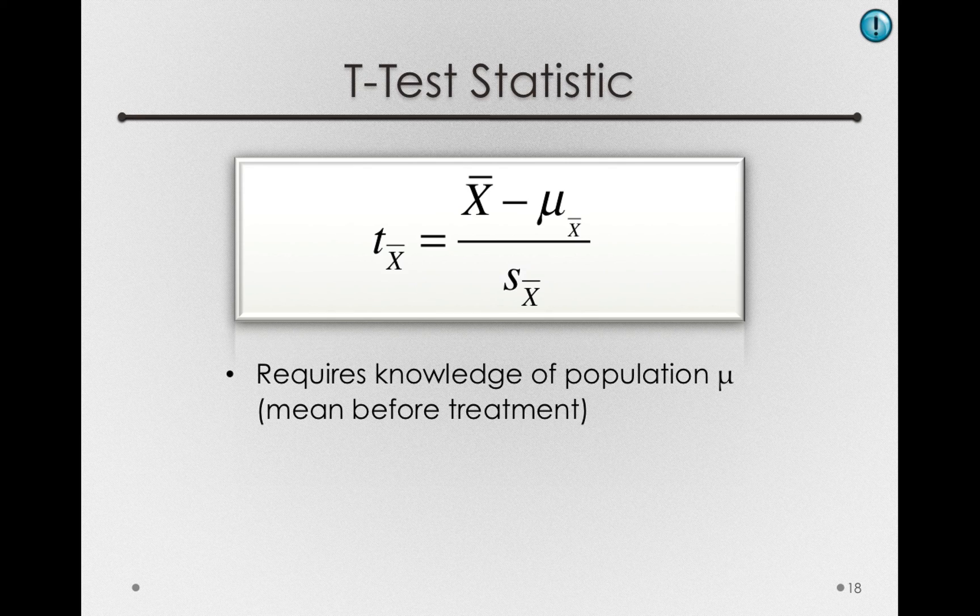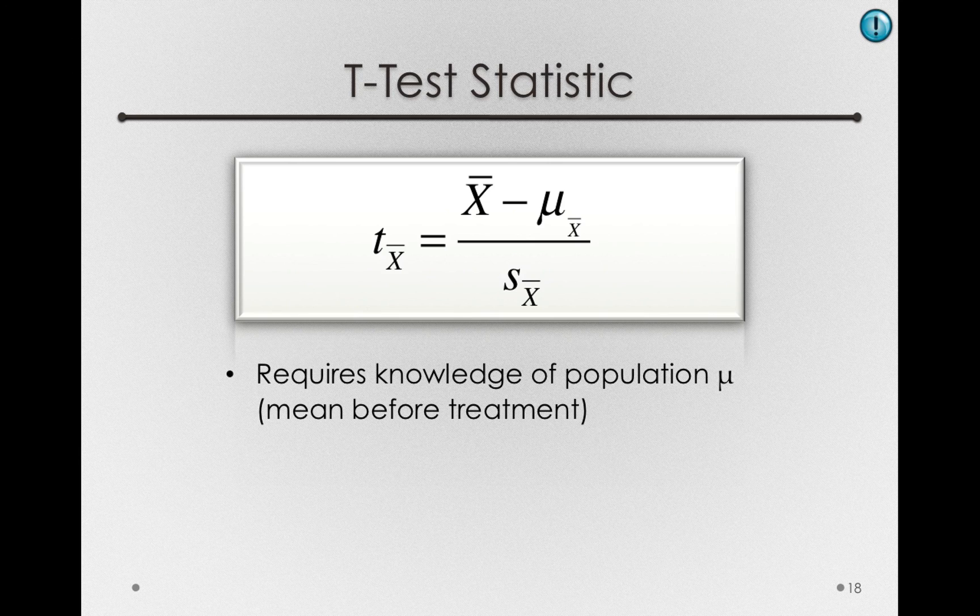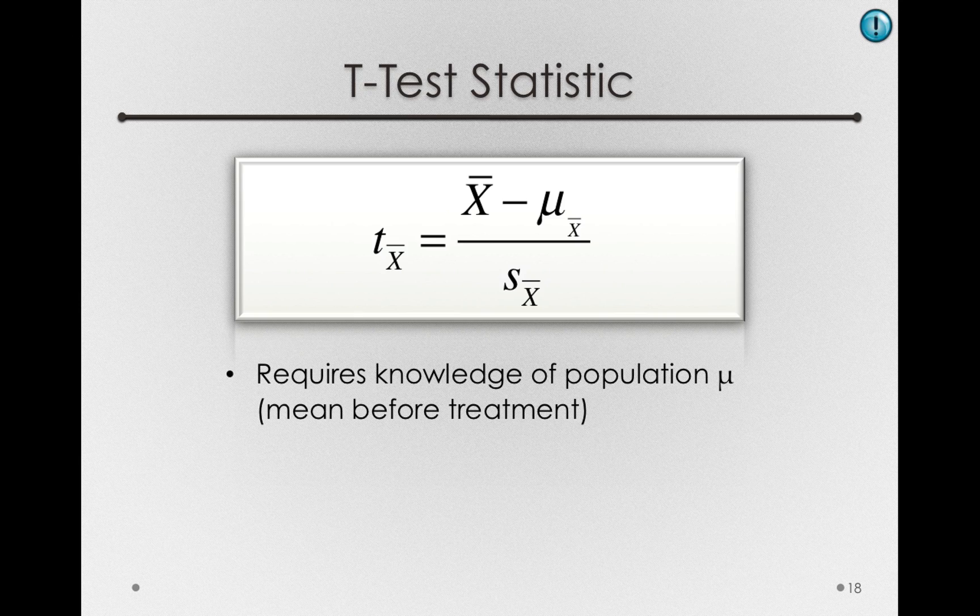But for now, notice the critical difference between a t-test and a z-test is that in a t-statistic, we're estimating the standard deviation of the sampling distribution of sample means. That is, we're using s sub x bar, not sigma sub x bar.